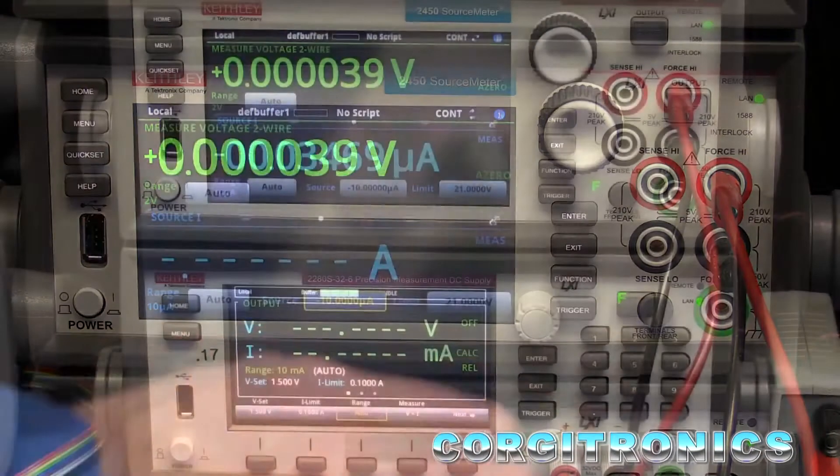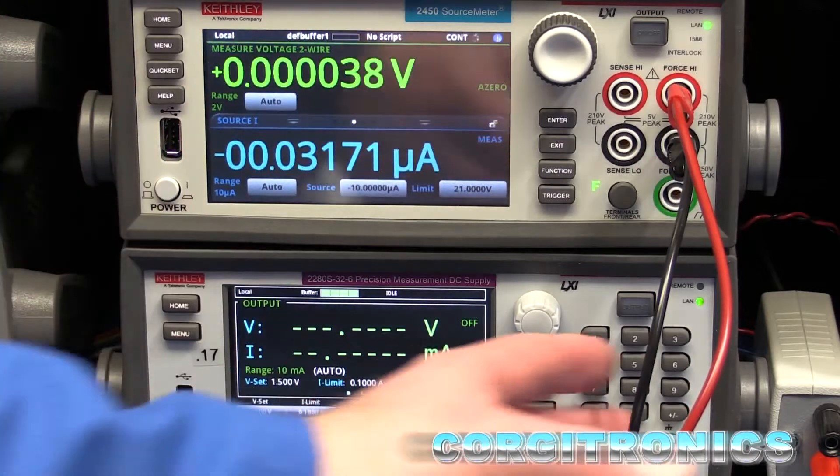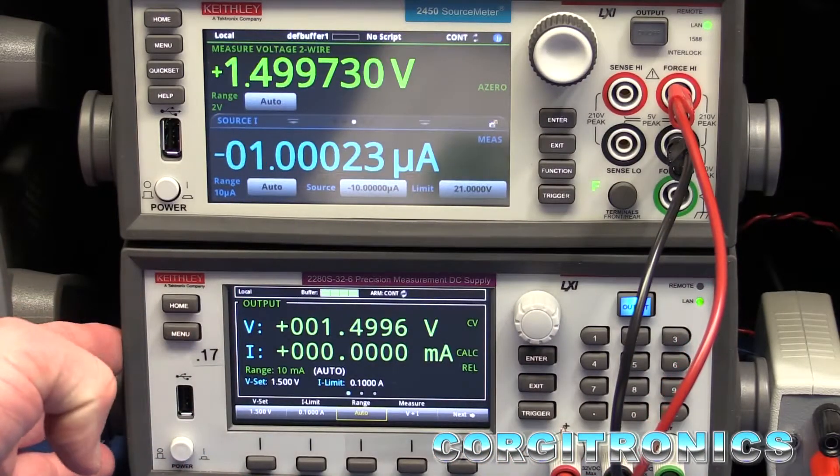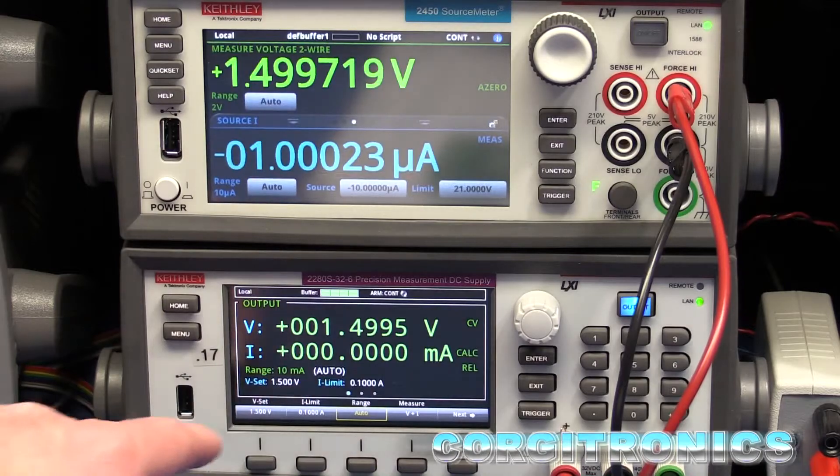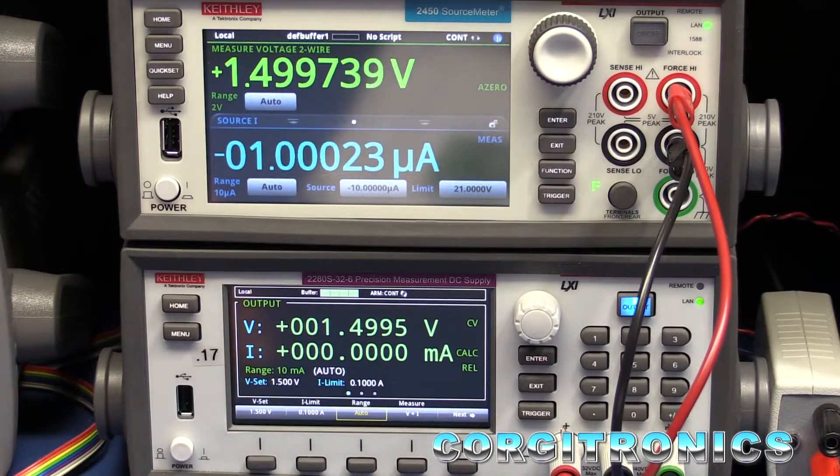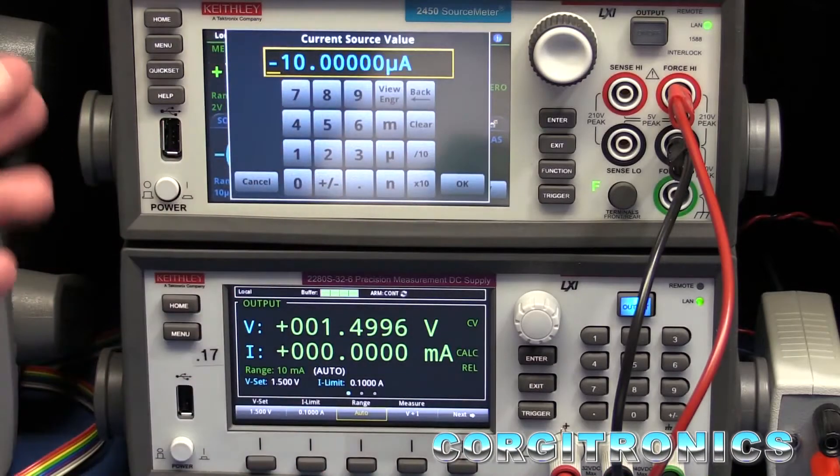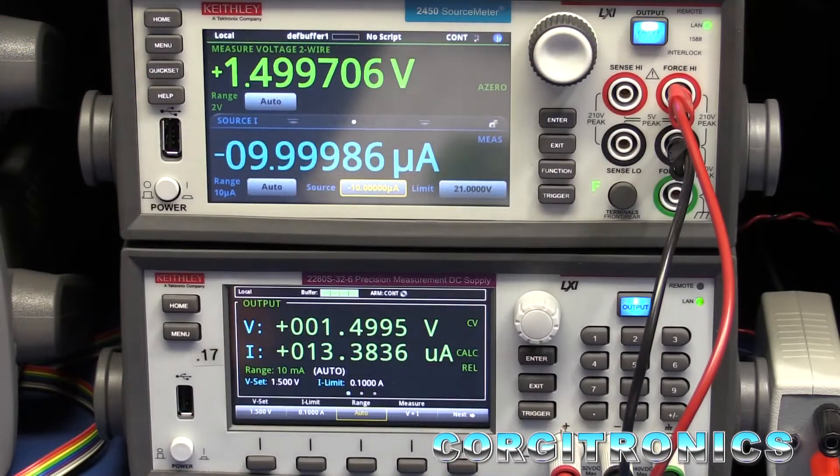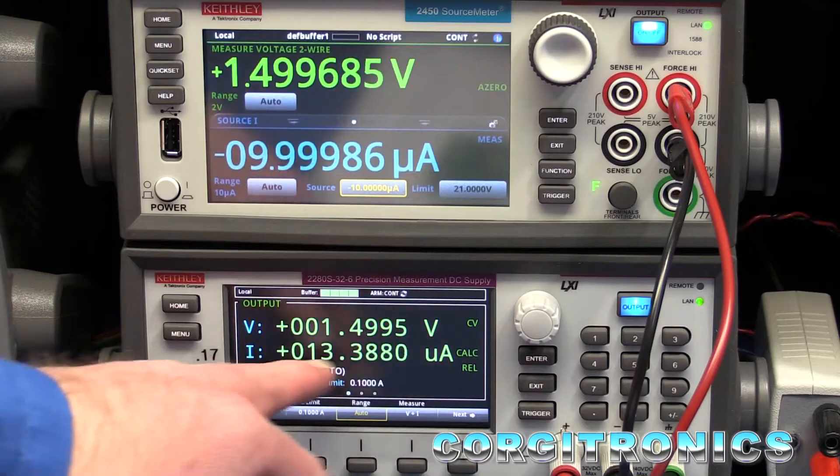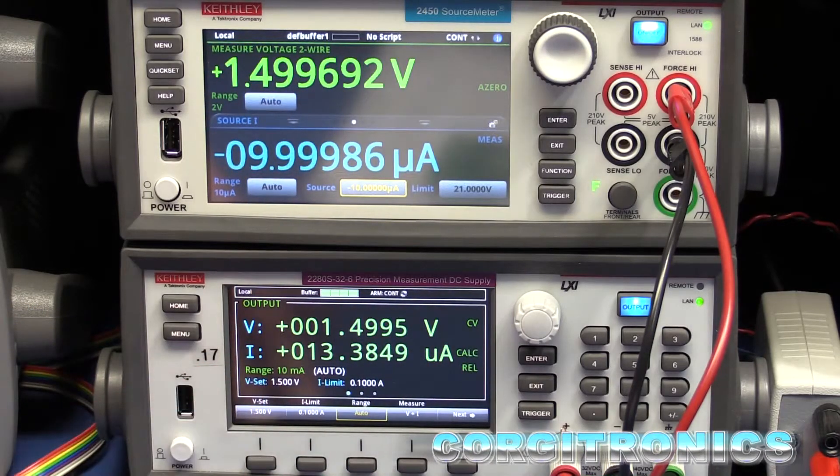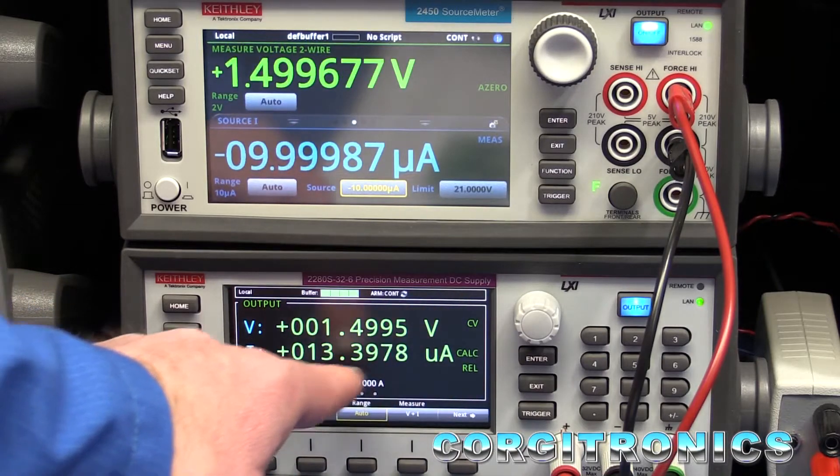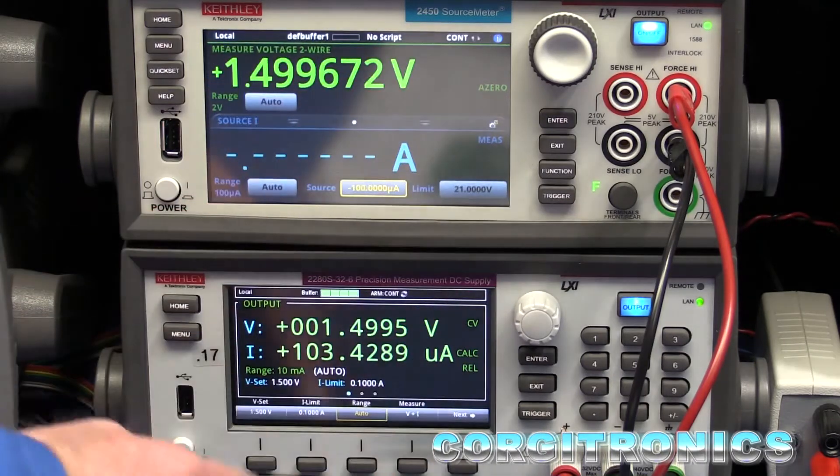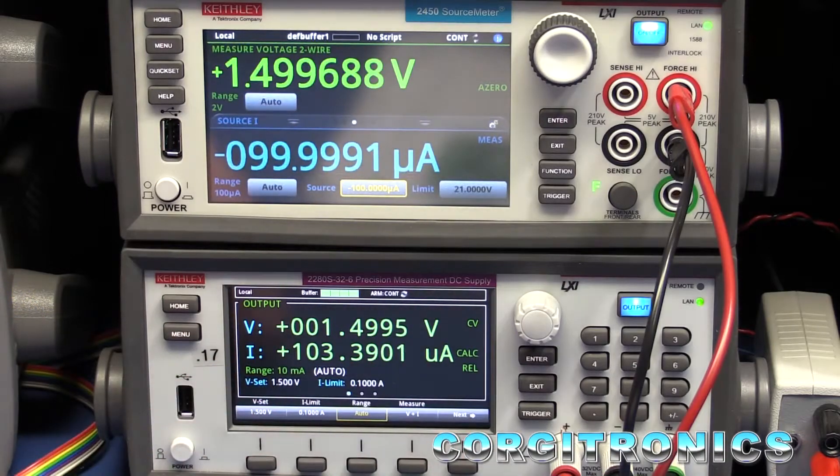To demonstrate using this as a load, we have it hooked directly to a power supply. The power supply is turned on and set to 1.5 volts and it's currently reading 0 milliamps. We have the source meter set to a negative 10 microamps. When we turn it on, we can see that the power supply is measuring an output of 13.3, maybe 13.4 microamps of power. This 3.3 microamp error is fairly low. If we go up to 100 microamps, we see that it's still 3.3, 3.4 microamp error.